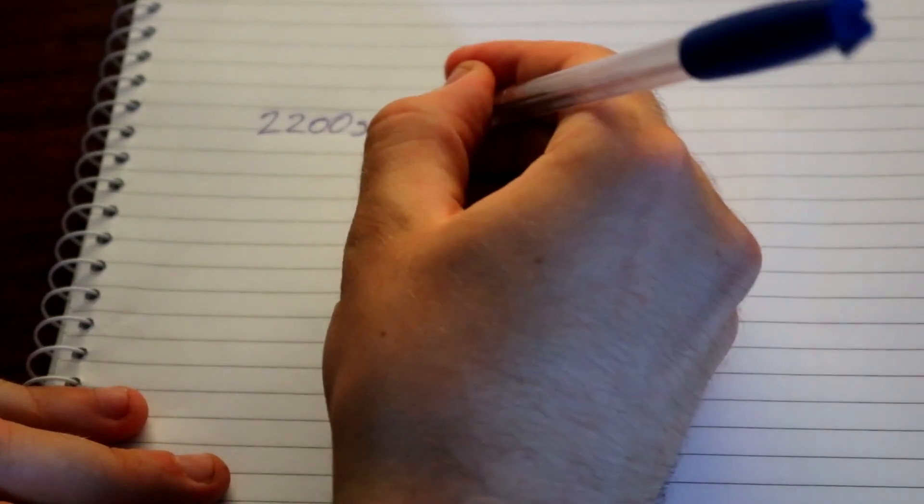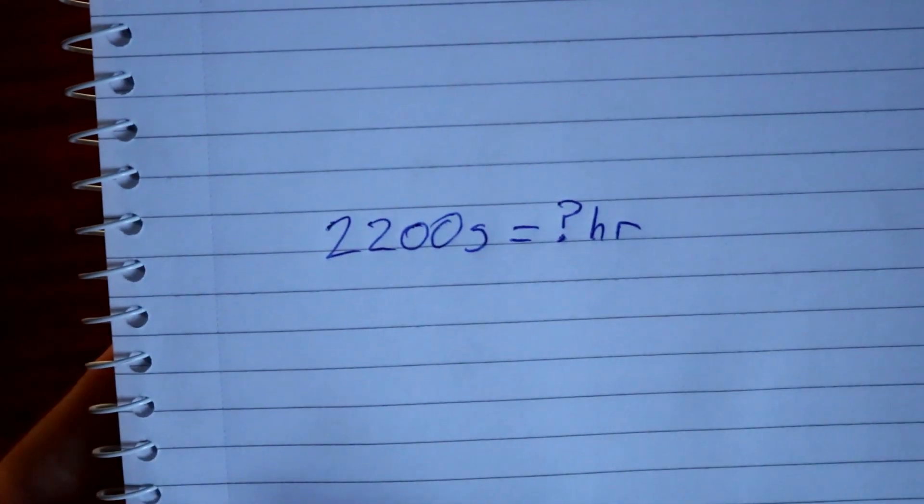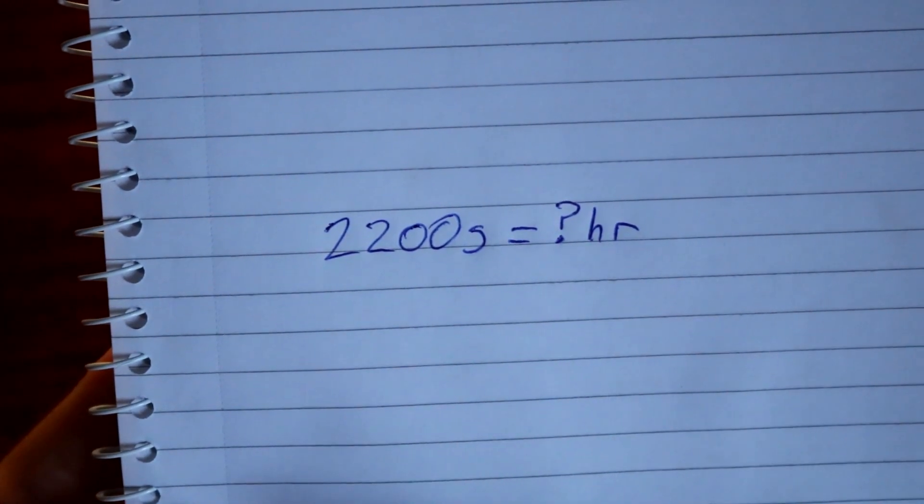The first thing you need to do is determine the number of seconds you have. This information should be given or should be calculated by yourself. I'm going to be converting 2200 seconds into hours.